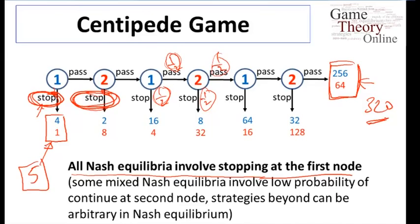The Nash equilibria of this game predict that players are going to get very low payoffs — 4 and 1 — much worse than what they'd get by committing to pass along for a total of 320. This game is very intriguing. It gives us an idea that players' self-interested motives can lead to outcomes which are very bad compared to the social optimum. It's a richer game in some senses than a prisoner's dilemma, but has the same kind of conclusion: a much worse outcome than players would like to see.